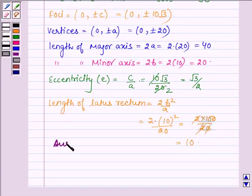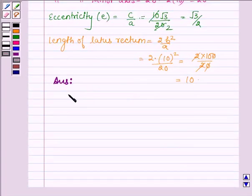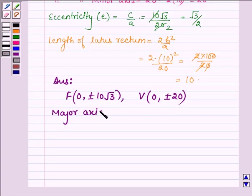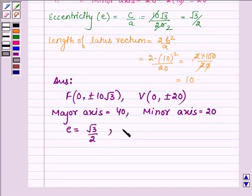Hence, our answer is: for the given equation of the ellipse, the foci are given by (0, ±10√3), the vertices are given by (0, ±20), the length of the major axis is 40, the length of the minor axis is 20, the eccentricity e = √3 / 2, and the length of the latus rectum is 10.